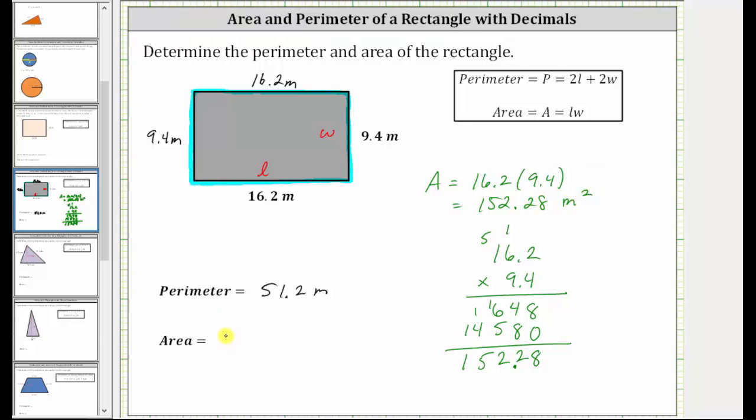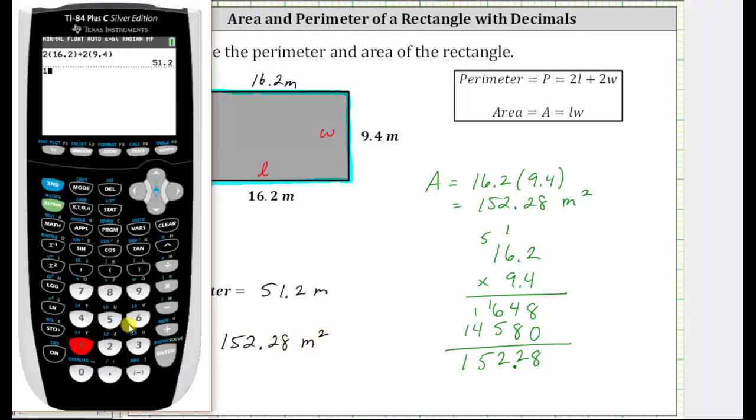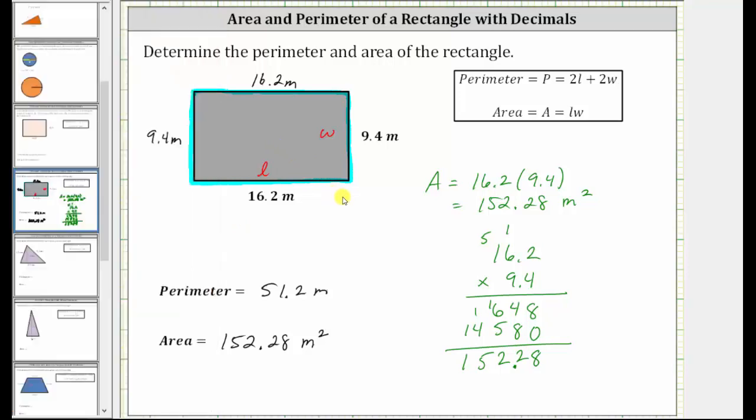So this is the area, but we'll go ahead and check it on the calculator before we go. So 16.2 times 9.4 is 152.28, verifying the area is correct. I hope you found this helpful.